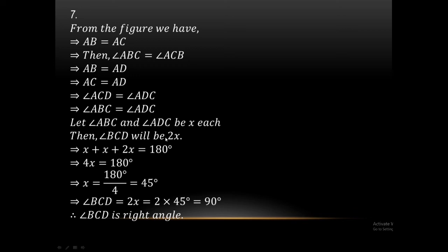Angle BCD equals 2x. In the triangle, the angles are x plus x plus 2x equals 180 degrees. So 4x equals 180 degrees, x equals 45 degrees. Therefore angle BCD equals 2 times 45 equals 90 degrees, which is a right angle.